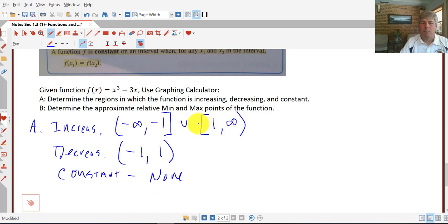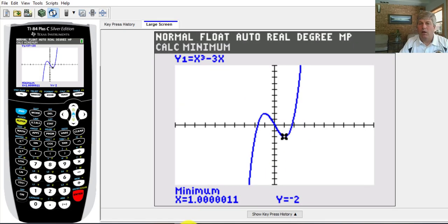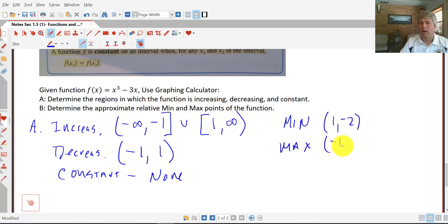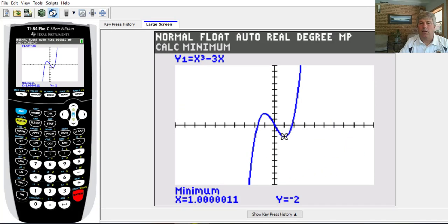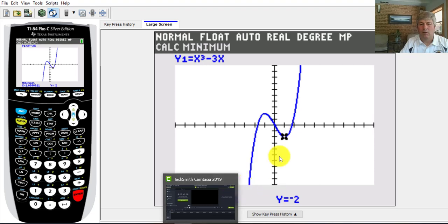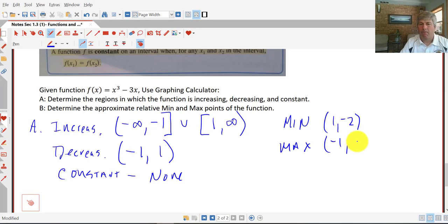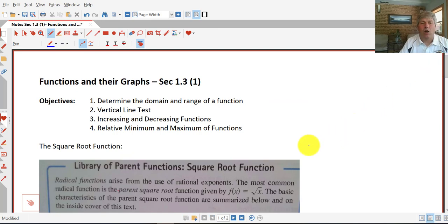So my minimum and maximum points. My minimum was at 1, negative 2. And my maximum, negative 1, and it looks like 2. That is our introduction to domain and range, the vertical line test, increasing and decreasing functions, and finding the relative max and min using your calculator. And with that, I will see you in class.